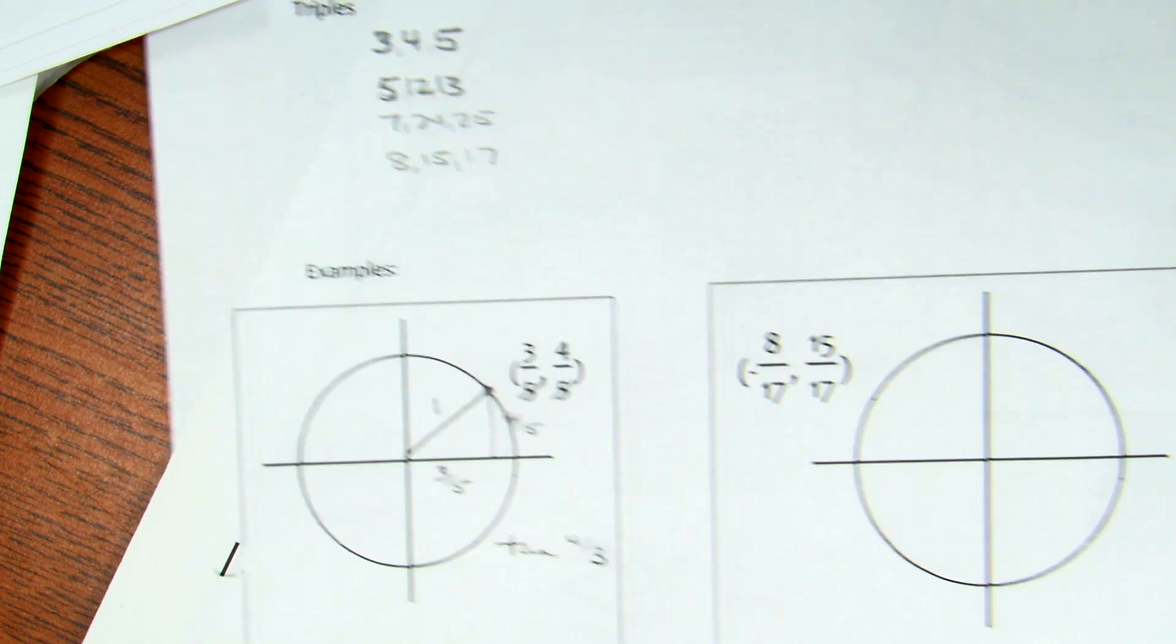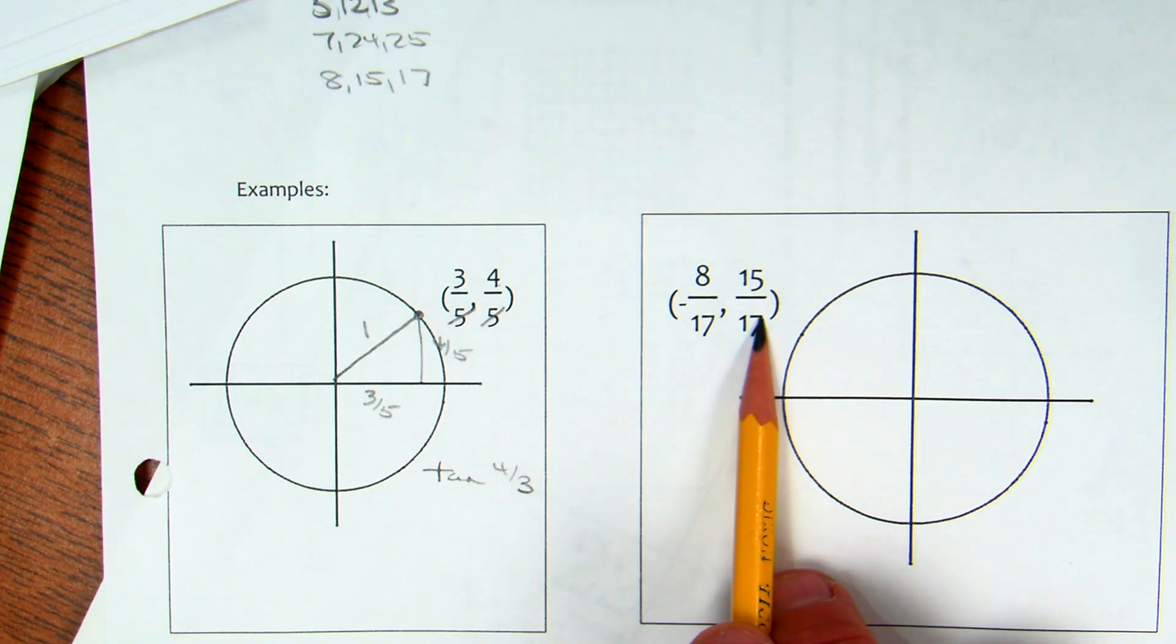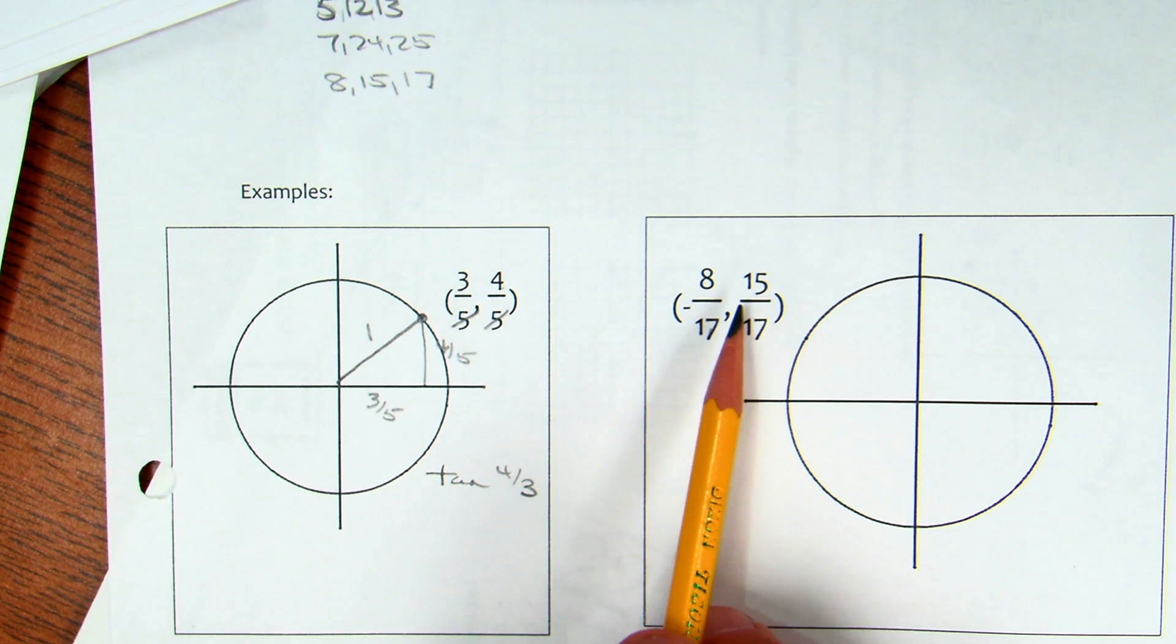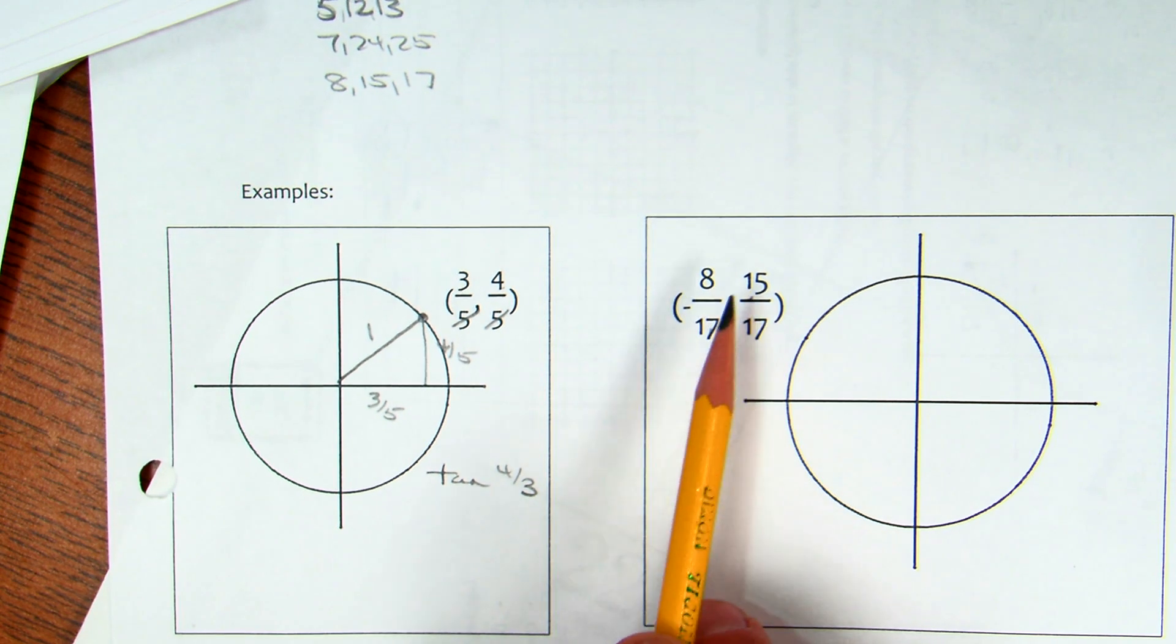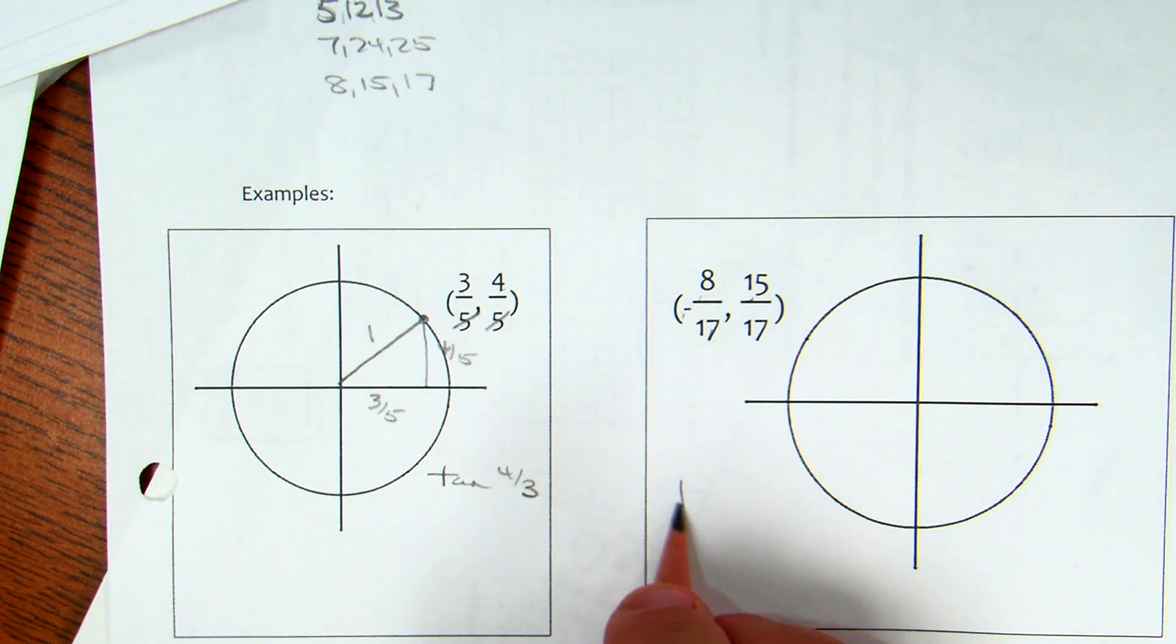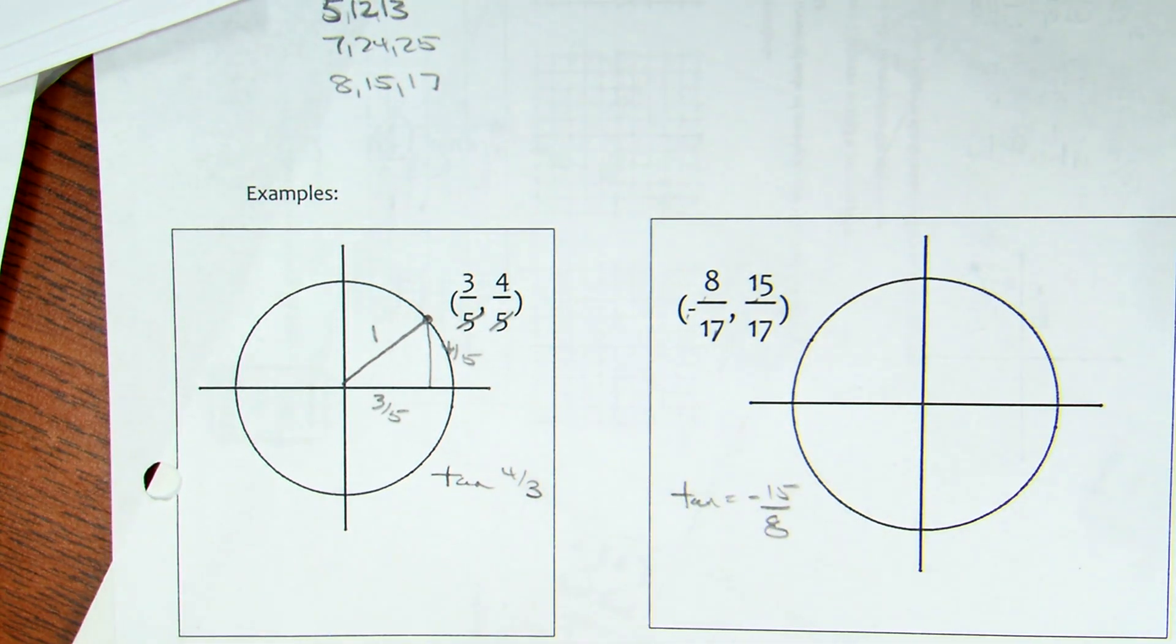So if I look at the next one, 8, 15, and 17, they make up the numbers of the triple. So again, my sine would be 15 over 17. My cosine would be negative 8 over 17. My tangent would be the numerator, which is 15, over this numerator, which is 8. You just have to remember it's what type of 8? Negative. So my tangent equals negative 15 over 8, which means my cotangent would be negative 8 over 15. Everything else is exactly the same. So you'll have one of those as well.